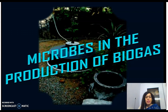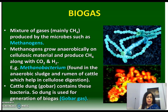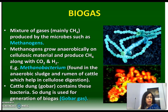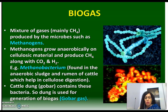Biogas is mainly a mixture of gases, primarily methane, produced by microbes called methanogens. These anaerobic bacteria grow on cellulosic material and produce methane along with carbon dioxide and hydrogen gas. For example, Methanobacterium is found in anaerobic sludge and the rumen of cattle, where it helps in cellulose digestion. Cattle dung contains these bacteria and is used for biogas generation.